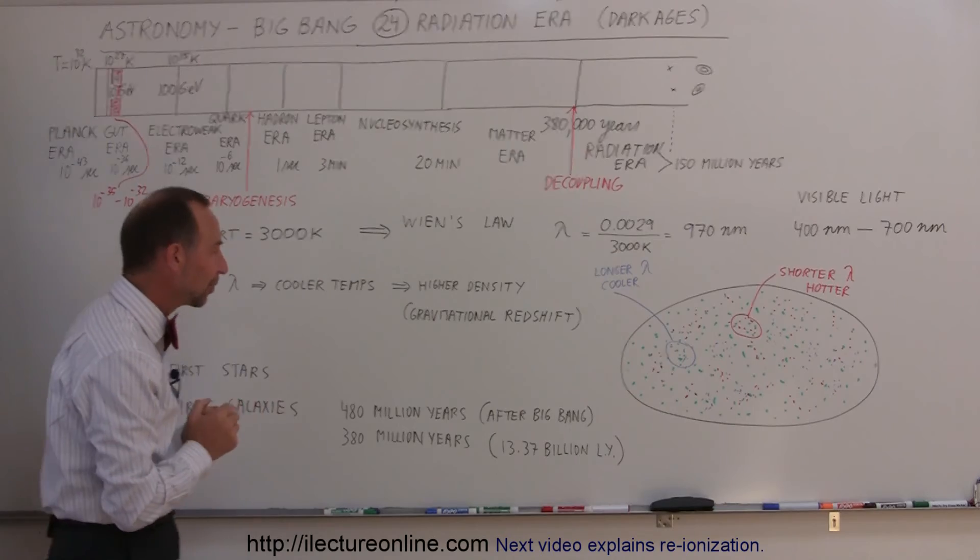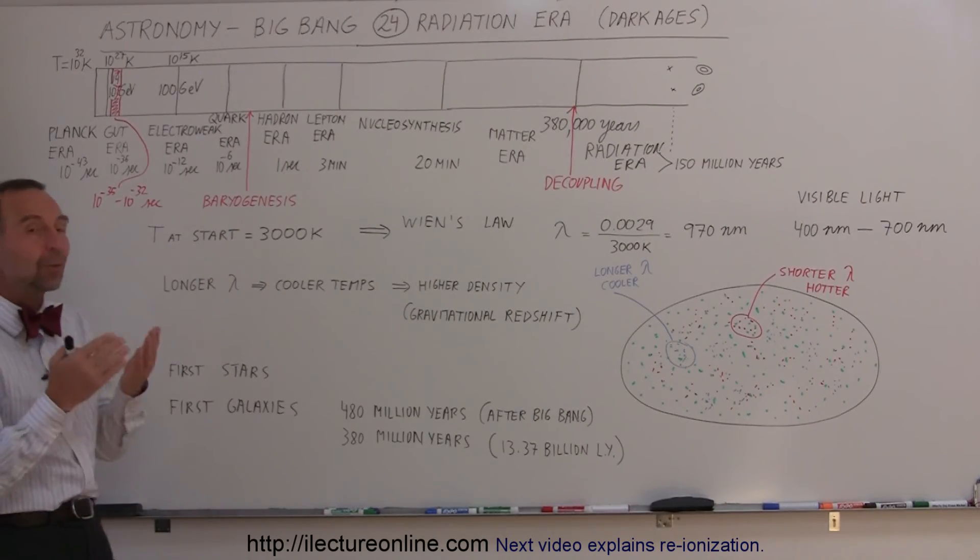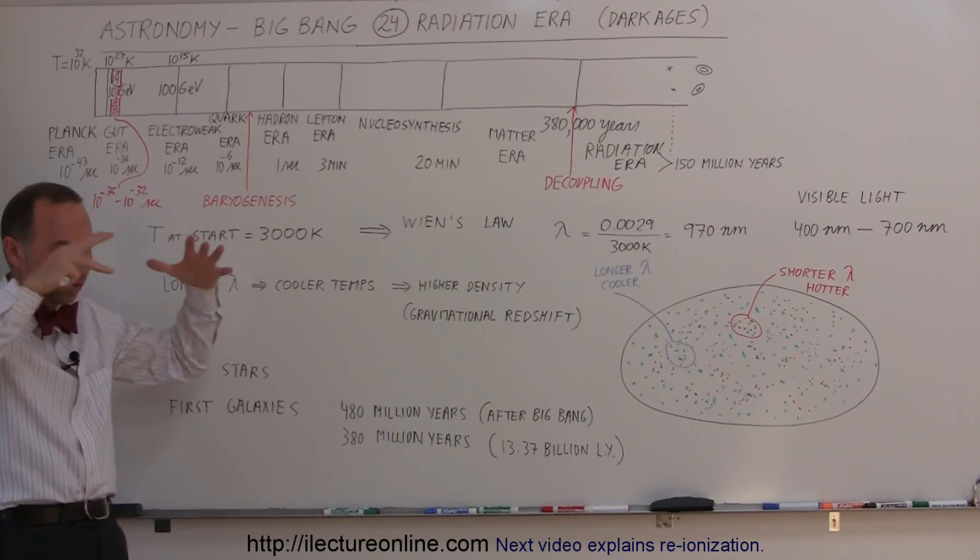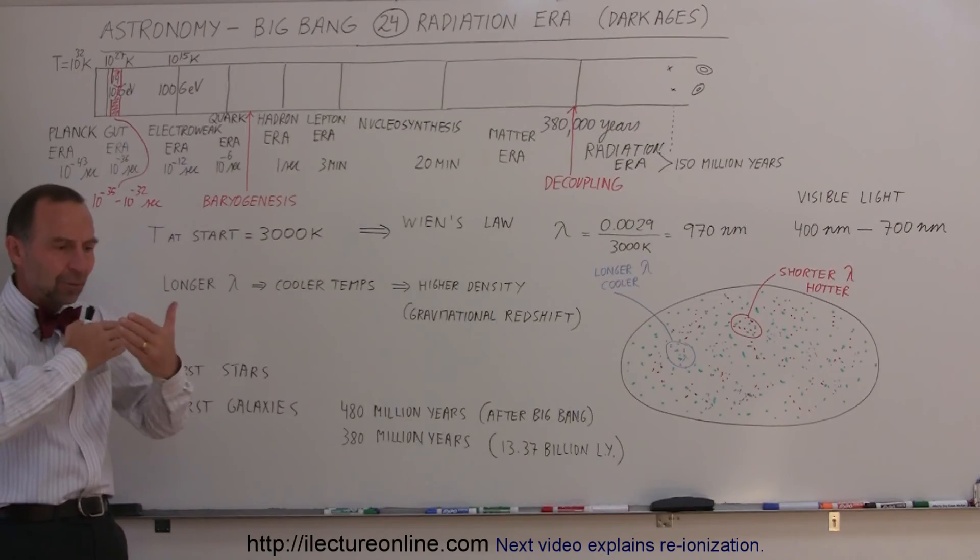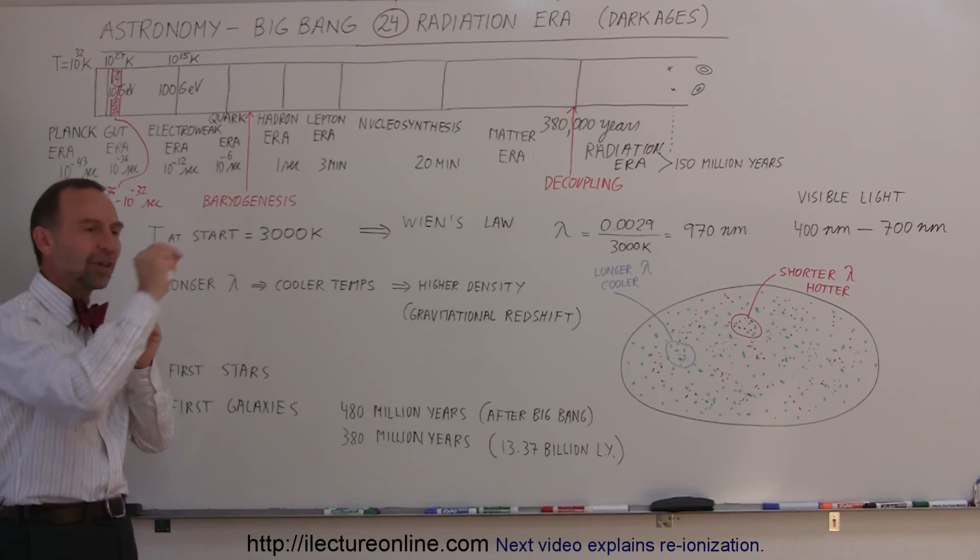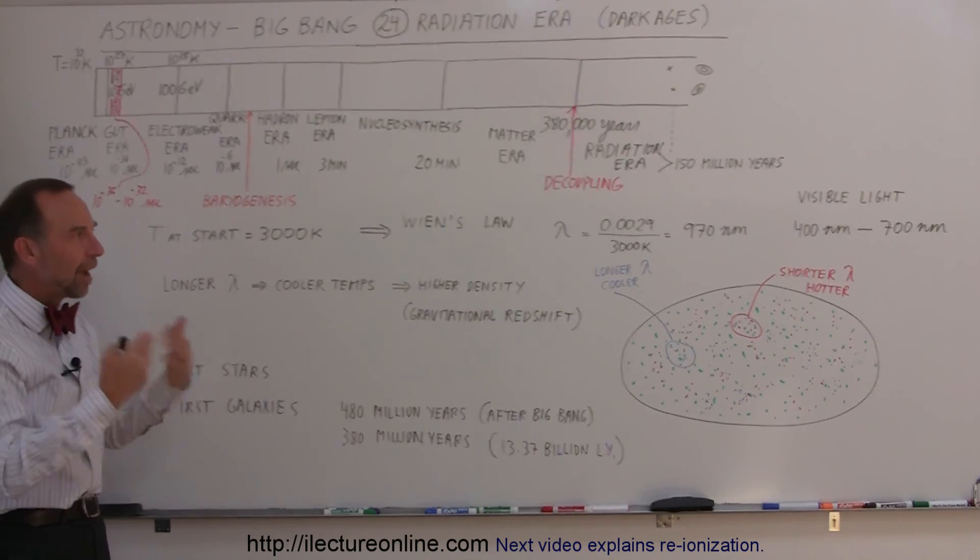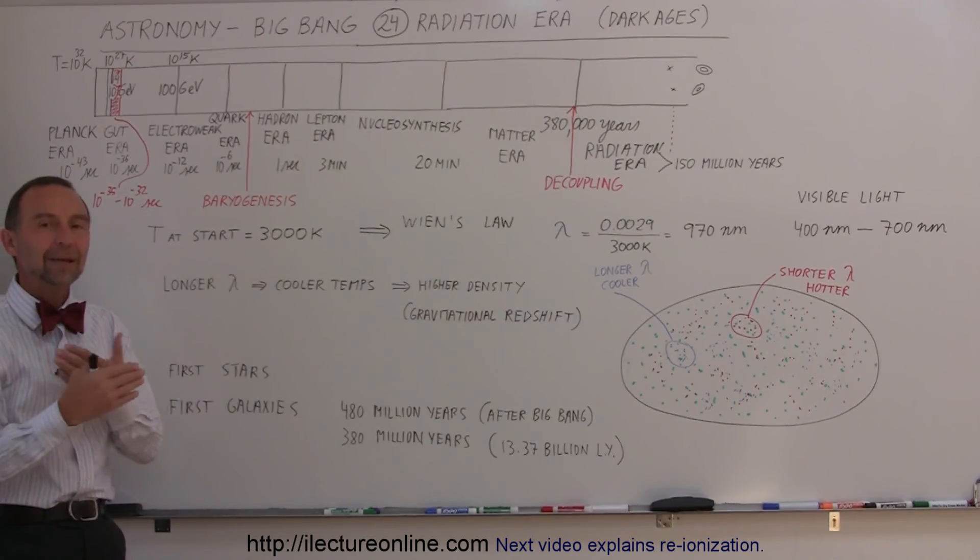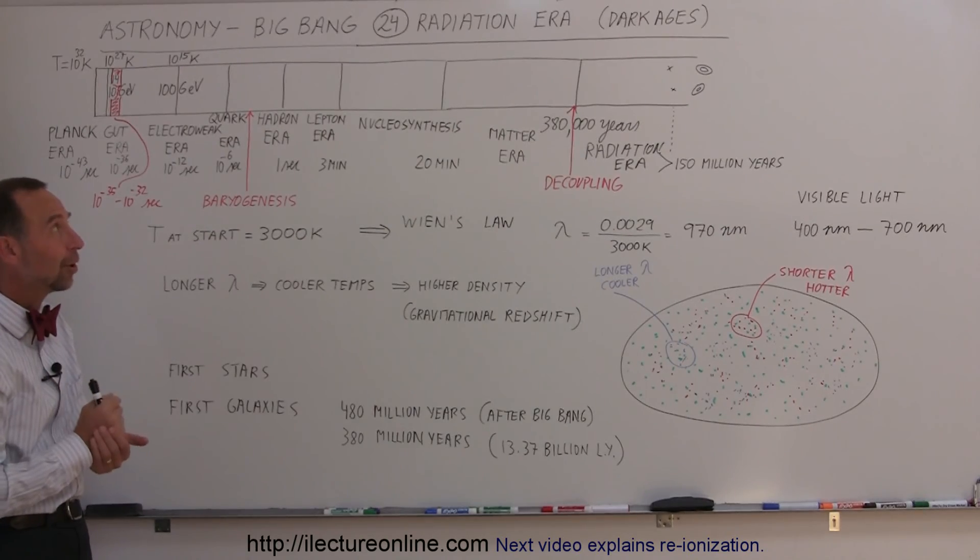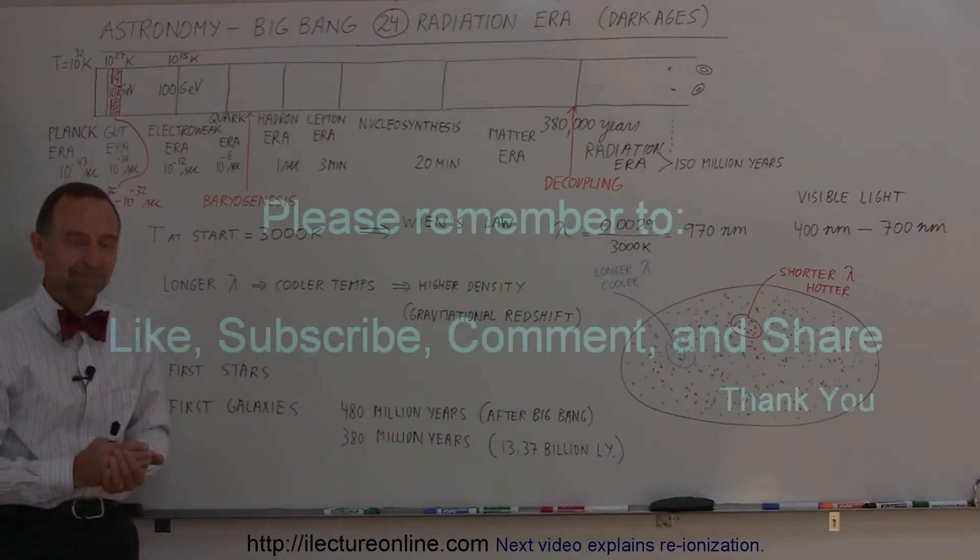That gives us an idea of what it was like after decoupling. After the whole universe was like the inside of a star, we went past the threshold. The radiation was set free from the matter. Now we were in what we call the Radiation Era, which dominated the universe, but in a way that there was no visible light present. That is what we call the Radiation Era, and sometimes also called the dark ages of the universe.